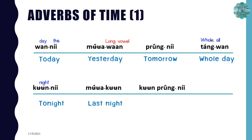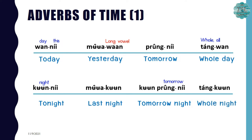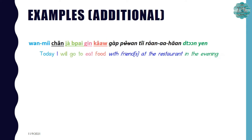The next one is เมื่อคืน, which means 'last night.' And พรุ่งนี้ means 'tomorrow,' so คืนพรุ่งนี้ means 'tomorrow night.' And the last one of this slide is ทั้งคืน, which means 'the whole night' or 'all night.'